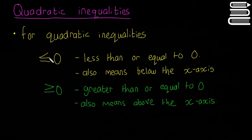As well as that, this symbol here is less than or equal to zero, or else if you just get rid of the line at the bottom, it's just less than. So that symbol means less than or equal to zero, but it also means below the x-axis.